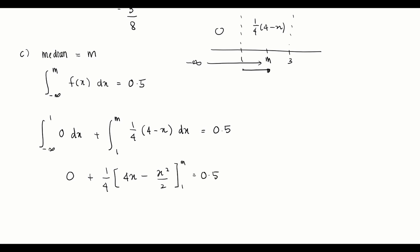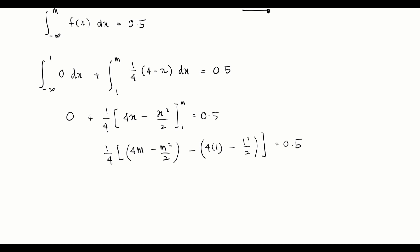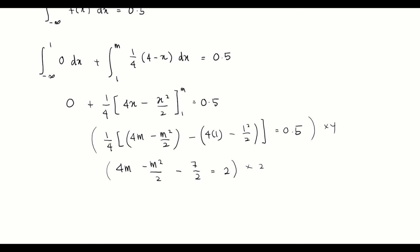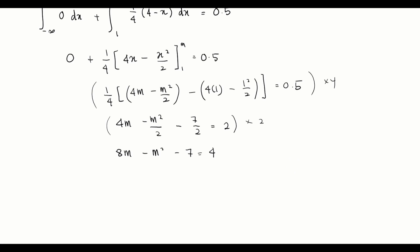Substituting the limits: (1/4)[4m - m²/2 - (4 - 1/2)] = 0.5, which gives (1/4)[4m - m²/2 - 7/2] = 0.5. Multiplying both sides by 4: 4m - m²/2 - 7/2 = 2. Then multiplying both sides by 2 to eliminate the denominator: 8m - m² - 7 = 4.